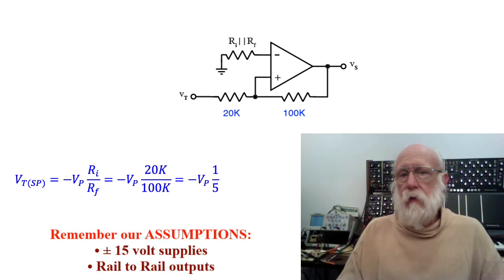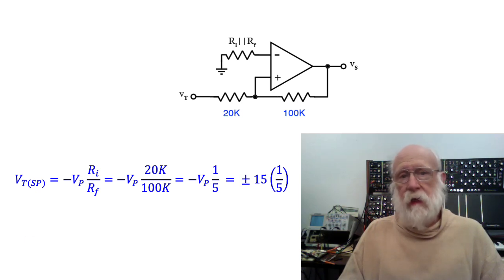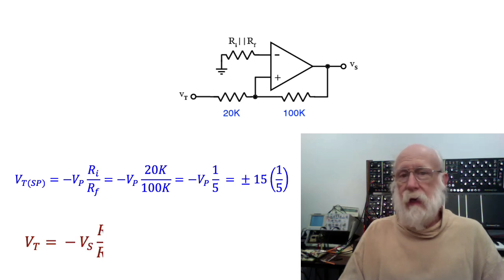Since we're using op amps with rail-to-rail outputs, the output will either be plus or minus 15 volts, and the equation for calculating the values for the input voltage, V sub T, where the comparator switches is given by minus V sub S times R sub I over R sub F.